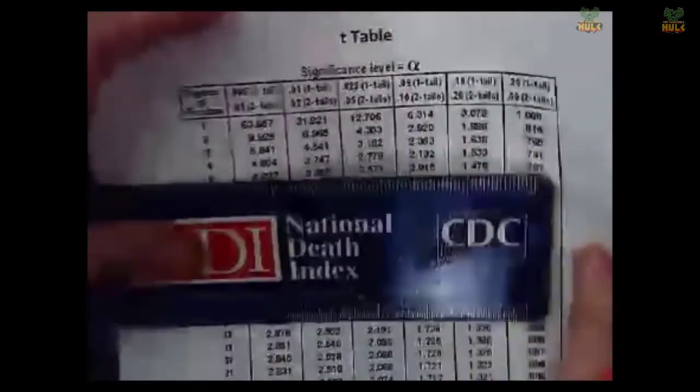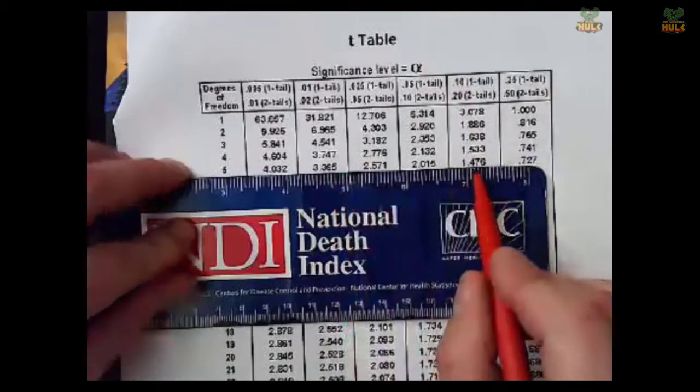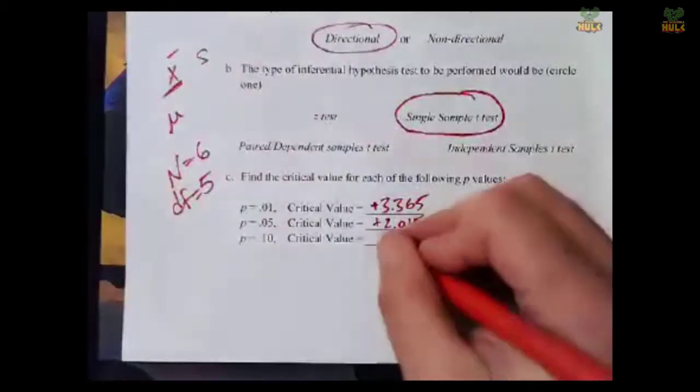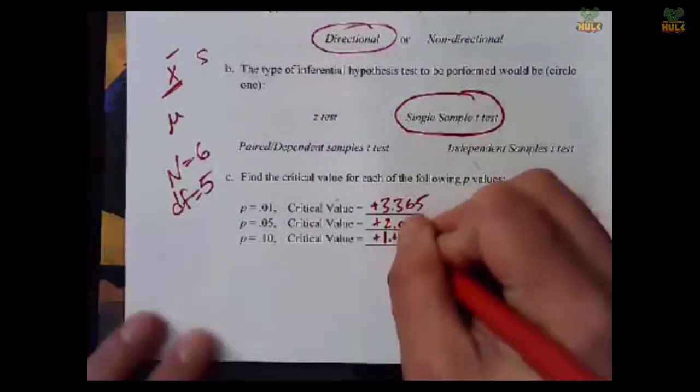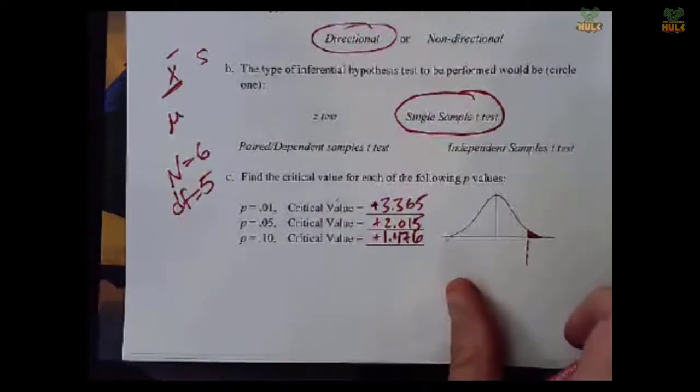When it's 1% of the distribution in the tail, when it's 5% in the tail, and when it's 10% of the tail. So for when it's 1% of the tail, we find the section that says 1%, 0.01, it says one tail next to it, and because our degrees of freedom are 5, I like to do this with a ruler, make sure you're getting the right value, one tail, 1%, the value is 3.365, so plus 3.365.